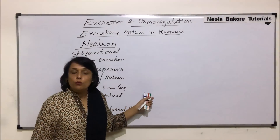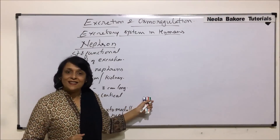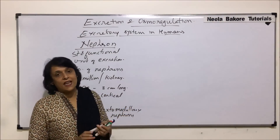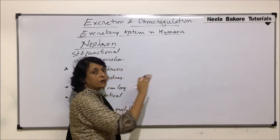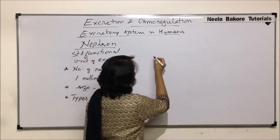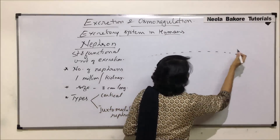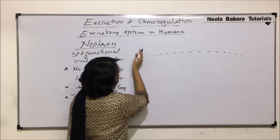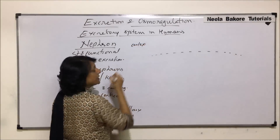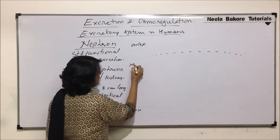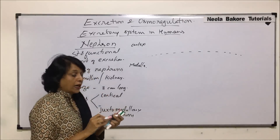We will draw these diagrams together so that it is easier for us to understand and compare. This outer upper part is the cortex, and here we are talking of the medulla region.